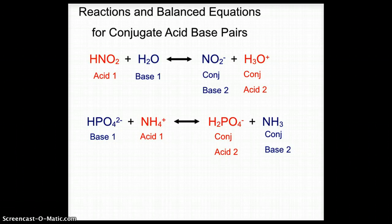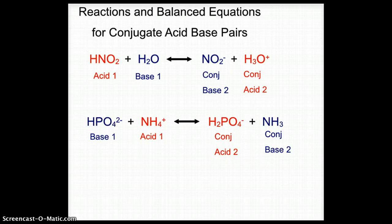If we take HPO₄²⁻ as our base and add the acid ammonium, when ammonium gives up its hydrogen to HPO₄²⁻ we end up with ammonia as the conjugate base of the acid ammonium, and we get H₂PO₄⁻ as the conjugate acid of the base HPO₄²⁻. Keep in mind that the conjugate acid is paired with the base, and the conjugate base is paired with the acid.